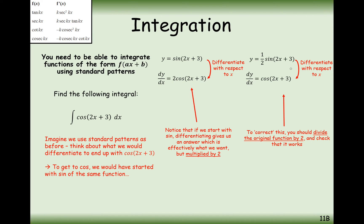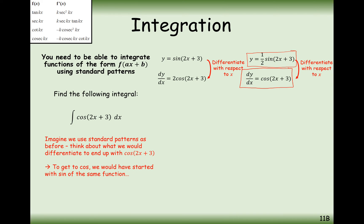So if we were to have started with a half sine(2x + 3), then when we differentiate this, the 2 and the half will cancel each other out. So we're just left with dy/dx equals cos(2x + 3). Therefore, if the derivative is this — which is what we've got in our integral — then the answer to the integral must be a half sine(2x + 3).